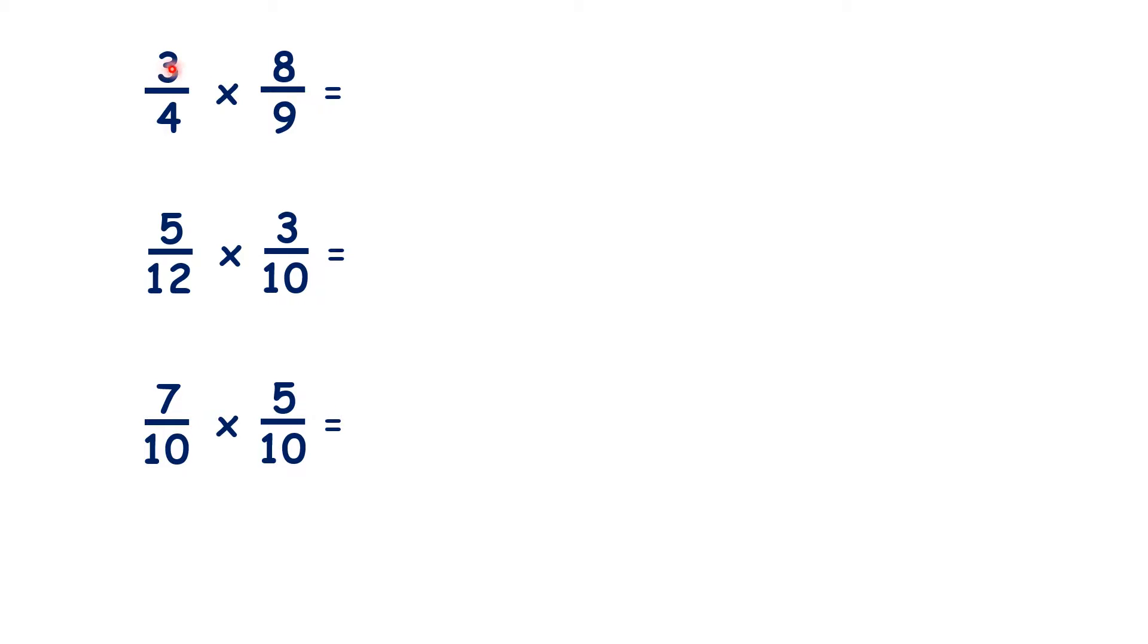So for this first question, our numerator will be 3 times 8, and our denominator will be 4 times 9, so that gives us 24 over 36.